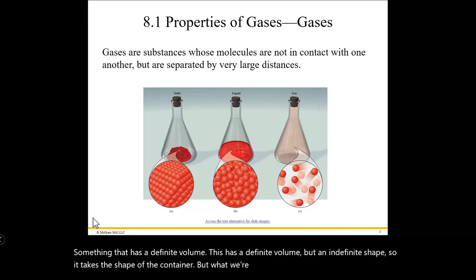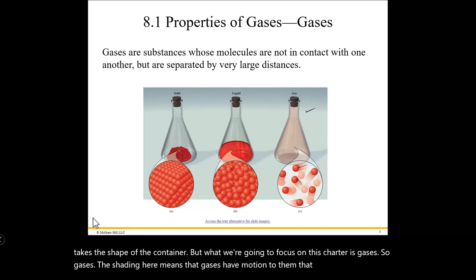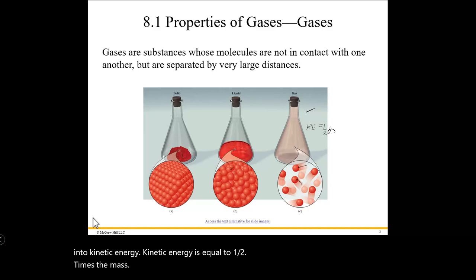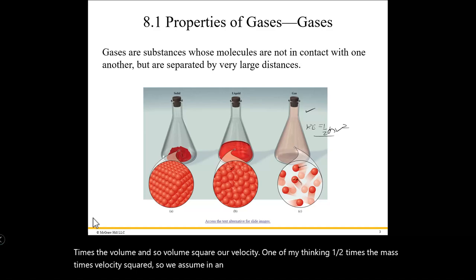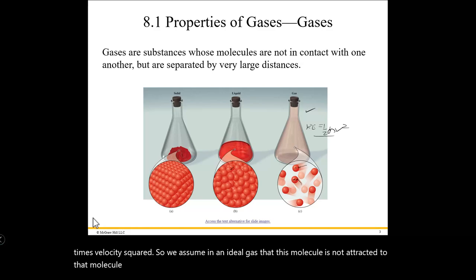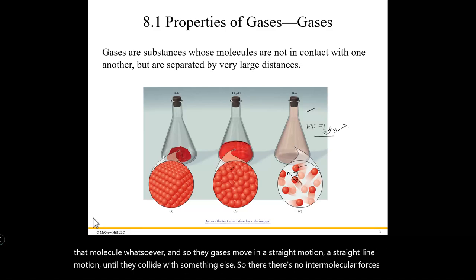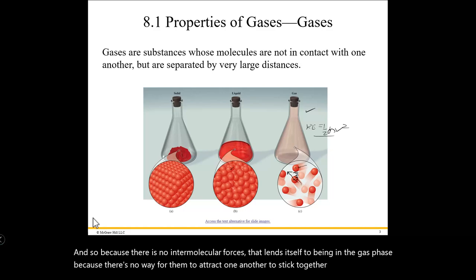What we're going to focus on in this chapter is gases. The shading here means that gases have motion to them. We can translate that into kinetic energy: KE = ½mv², one-half times the mass times velocity squared. We assume in an ideal gas that molecules are not attracted to one another whatsoever. Gases move in straight-line motion until they collide with something else. There are no intermolecular forces between the gas molecules in the ideal gas, so there's no way for them to attract one another, stick together, or be a liquid or a solid.